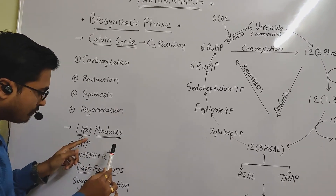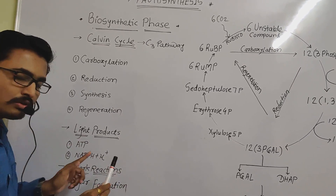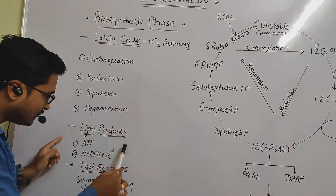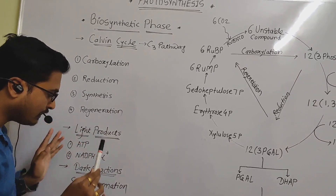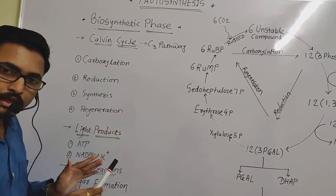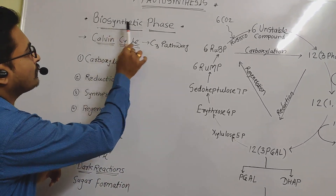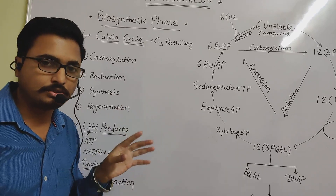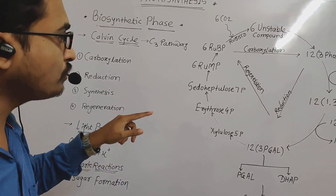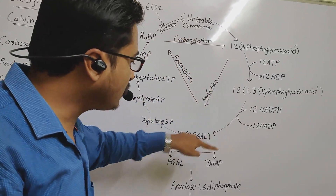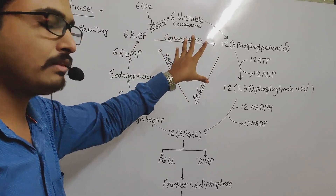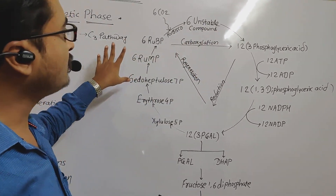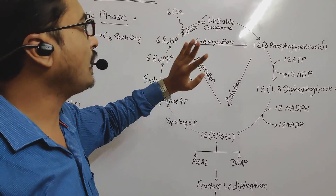Dark reactions do not have a direct requirement for sunlight, but the products of the light reaction are utilized in the dark reaction. This is why dark reactions are also known as the biosynthetic phase. Here is the basic diagram about the C3 pathway and the Calvin cycle.